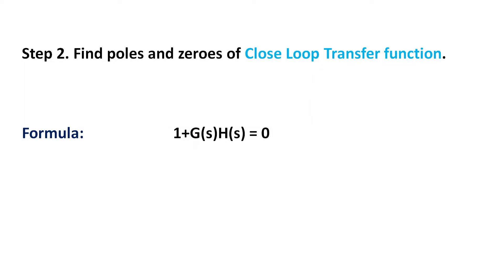Step two: now we have our closed-loop transfer function, find out the poles of the transfer function. We can calculate the poles by putting the denominator of the transfer function equal to zero. For more than third-degree polynomials, it's quite hard to calculate poles.